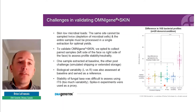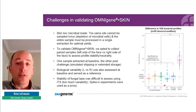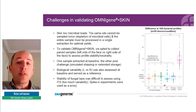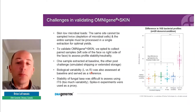Switching gears, I'll talk about the validation we did for OmniGene Skin. As mentioned, skin has very low microbial loads, so you cannot technically sample the same site twice. And since you want to process the entire sample in a single extraction for optimal yield, we had to be creative. We opted to collect paired samples — the left and right side of the face — and used those paired samples to assess profile stability and neutrality. One sample was extracted at baseline while the other was extracted post-challenge, which was either simulated shipping or extended storage at room temperature.